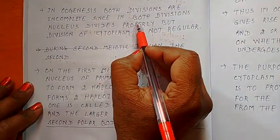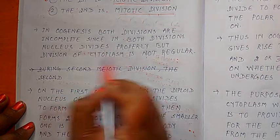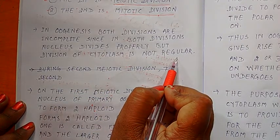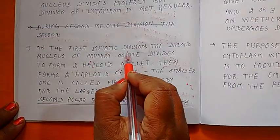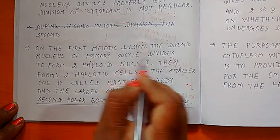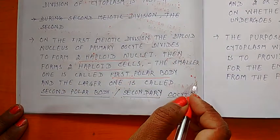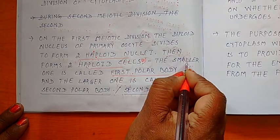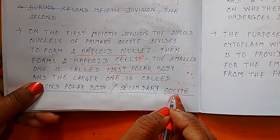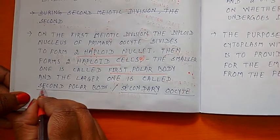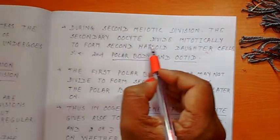The meiotic divisions are unequal because in both divisions the nucleus divides properly, but the division of cytoplasm is not equal. That's why one cell is larger and the other is smaller. On the first meiotic division, the diploid nucleus of the primary oocyte divides to form two haploid nuclei, forming two haploid cells (N number). The smaller one is called the first polar body and the larger one is called the secondary oocyte.